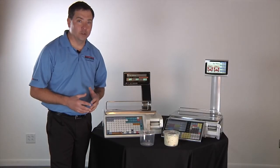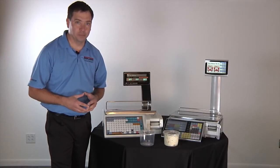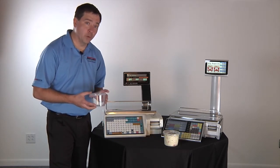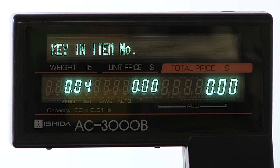Now let's take a look at how dual range weighing affects tare weights. Here I have an average size deli container. When I place it on the single range scale, the scale registers it as .04 pounds.